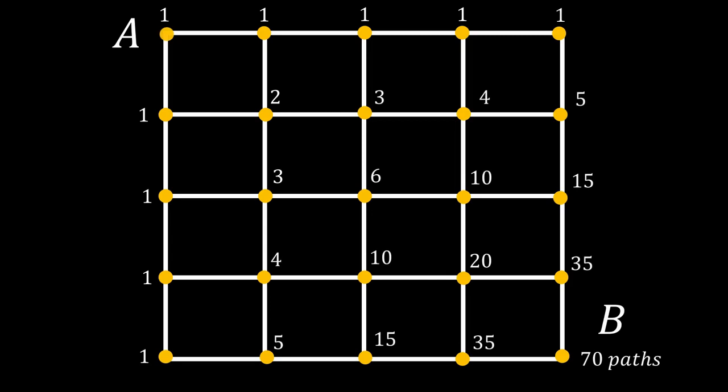So, we see that there are 70 paths to b, but we also see quite an interesting pattern. That is, the number we filled out looks exactly like the numbers in Pascal's triangle.